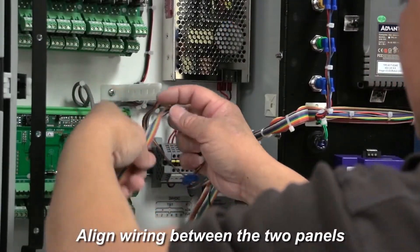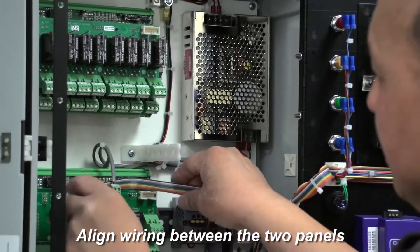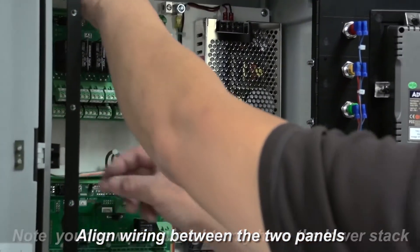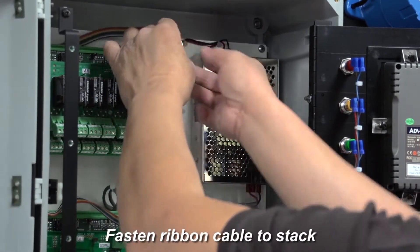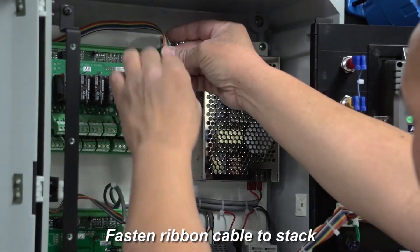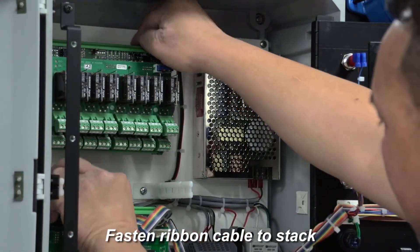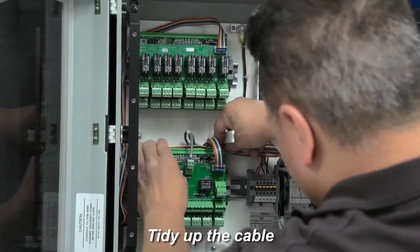Run the ribbon connector from the front panel to the stacks mounted on the back panel routing it around the boards. Then, plug the blue ribbon cable connector to the stack or stacks appropriately. Then, tidy up the ribbon connector to make sure it does not interfere with anything.